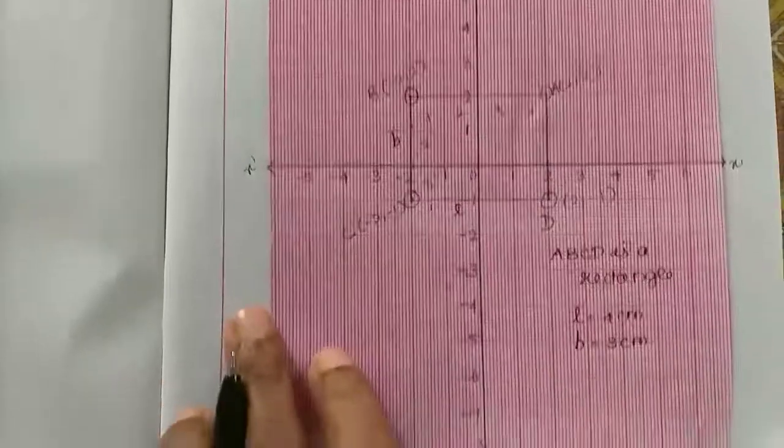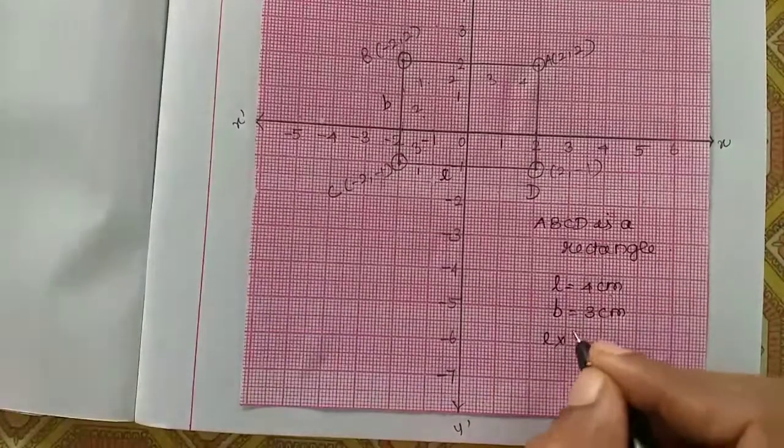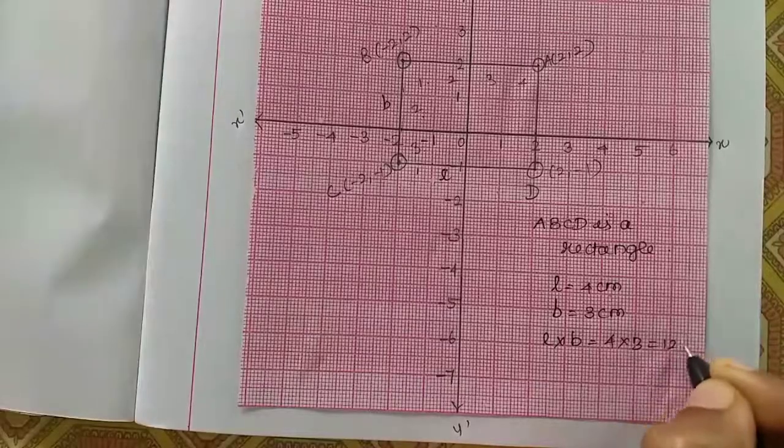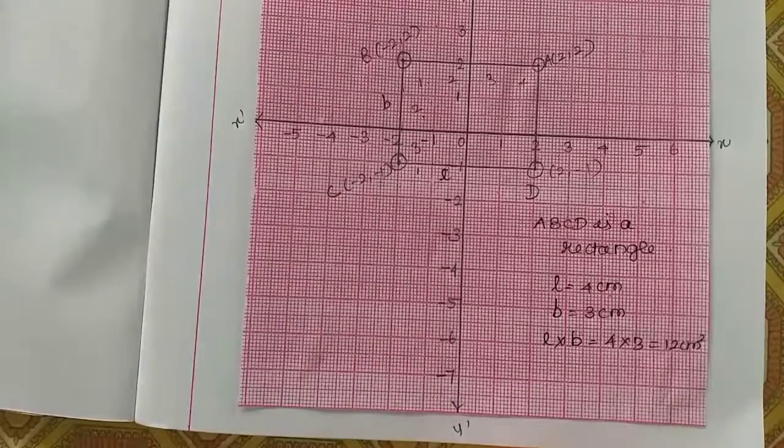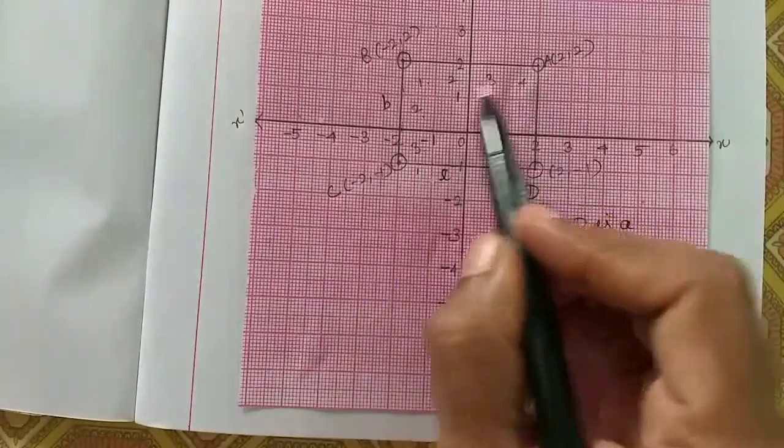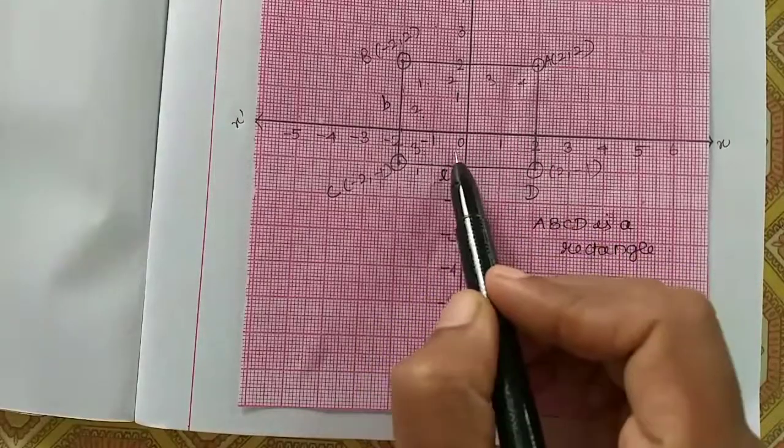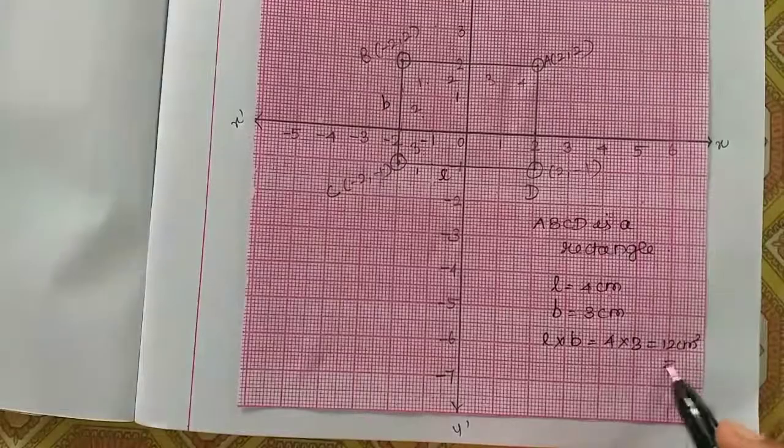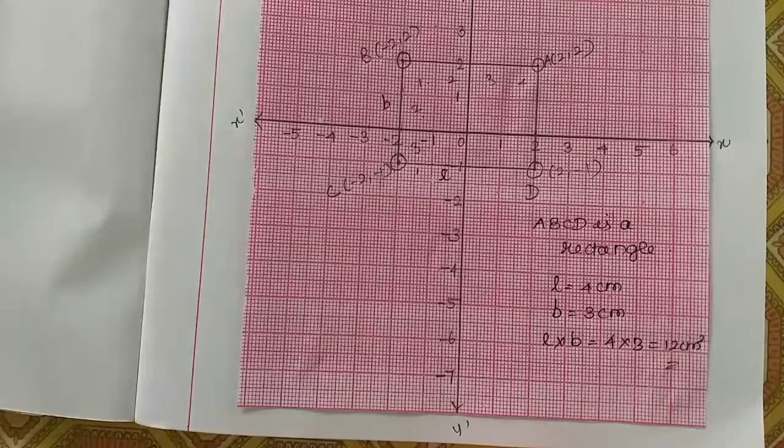Then area of the rectangle, what do you do? L into B, so 4 into 3 equals 12 centimeter square. Count: 1, 2, 3, 4, 5, 6, 7, 8, 9, 10, 11, 12. 12 boxes, so 12 centimeter square. That's all.